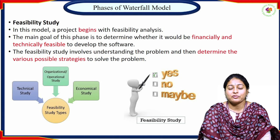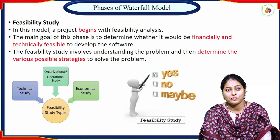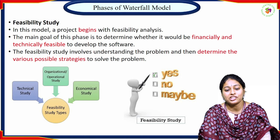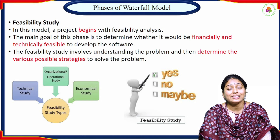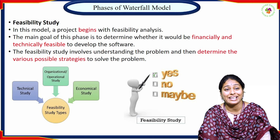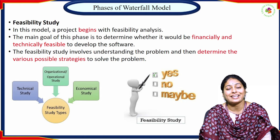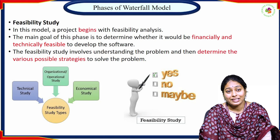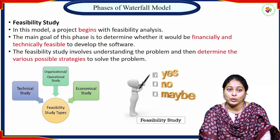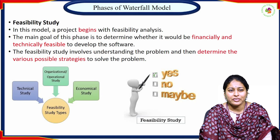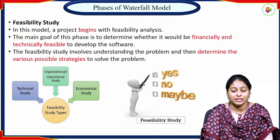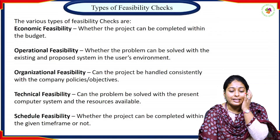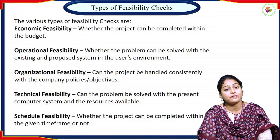The feasibility study is the first and foremost activity we need to conduct before beginning the software project. The main goal is to determine whether it would be financially and technically feasible to develop the software. It involves understanding the problem in depth and determining possible strategies to solve it. The outcome is yes, no, or maybe — whether to proceed further, stop, or resolve issues and proceed. There are four types of feasibility study.